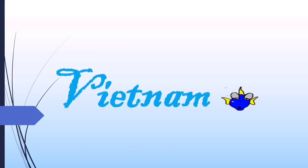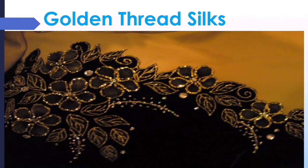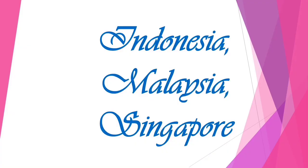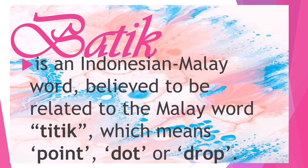Next is Vietnam. Vietnam also has their silk called the golden thread silks. Popular Vietnamese fabric ranges include, number one, shantung taffeta; number two, geling weave; and number three, ebony satin.